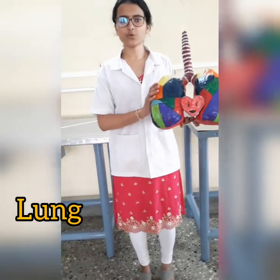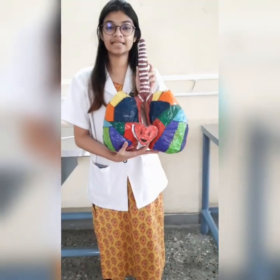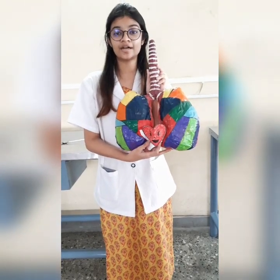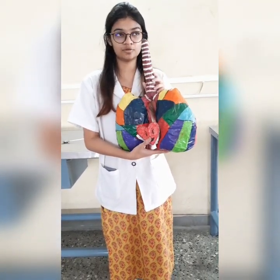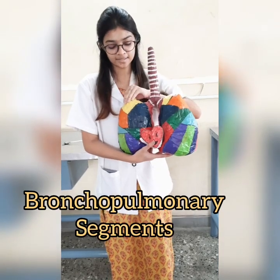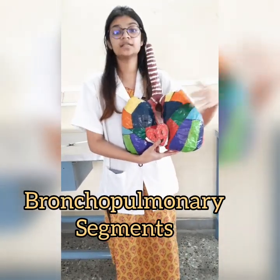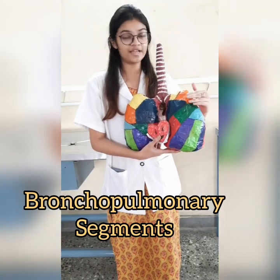There are two borders, two surfaces, the apex and the base. There are ten bronchopulmonary segments in each lung. The bronchopulmonary segment is the anatomical, surgical and functional unit. The right lung has three lobes, hence it is divided as five, two and three. The left lung has two lobes, hence it is divided as five and five.